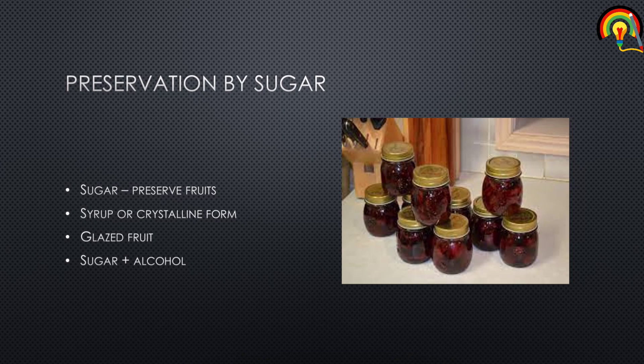The next type is preservation by sugar. Sugar is used to preserve fruits either in water or syrup form, or in crystalline form. Examples include apples, pears, peaches, apricots, and plums. The preserved material is cooked in sugar to a point of crystallization, and the resulting product is then stored dry.